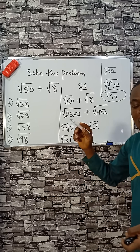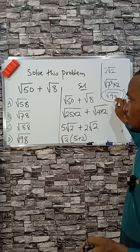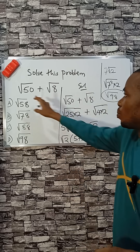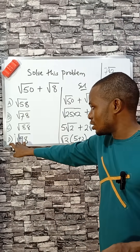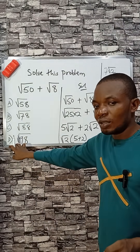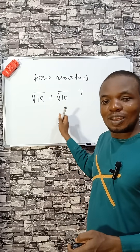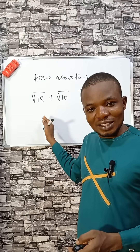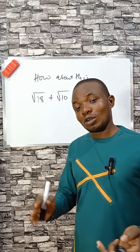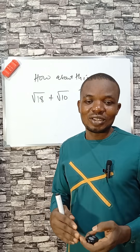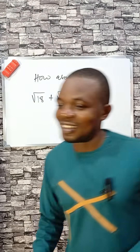If you have a calculator, punch in the square root of 98 and compare it with the square root of 50 plus the square root of 8 — they will give the same result. Now try this: square root of 18 plus square root of 10. Leave your answer in the comment section. If you like what I'm doing here, subscribe to this channel. See you in my next video. Bye!